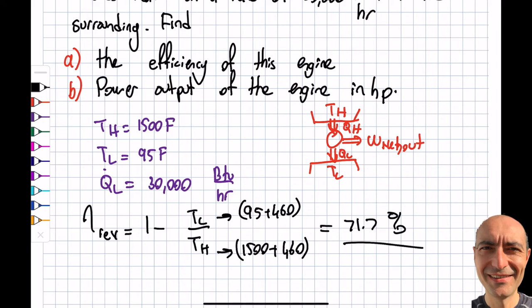This is the maximum efficiency of the engine. In real life, if you find the efficiency to be 80%, it means you made a mistake or you're a billionaire—the first option sounds more reasonable. Most likely, your engine efficiency will be significantly lower than 71.7%.